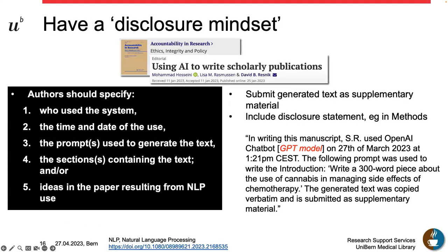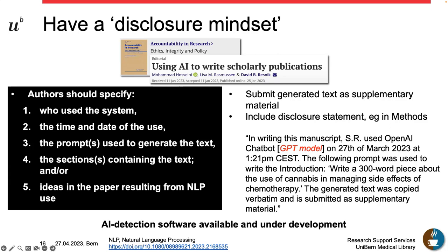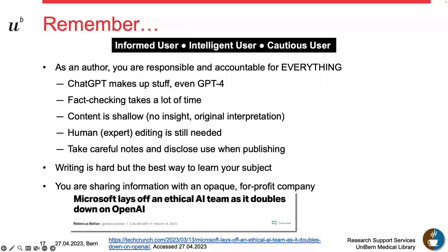In any case, what will help you is to have a disclosure mindset when using AI tools. You should document who used them, the time and date of use, the prompts given, and which sections of the paper contain text or ideas generated by the tool. This will need to be included as part of the manuscript, because AI detection tools are available and publishers are developing their own. Be transparent — disclose everything. It's in the best interest of everyone.